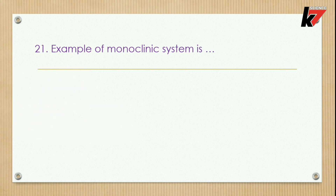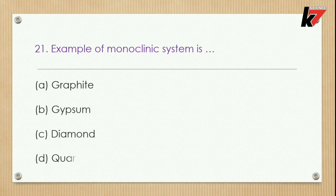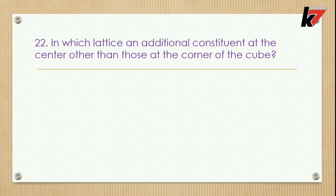Question 21: An example of the monoclinic system — options: graphite, gypsum, diamond, or quartz. Graphite is from hexagonal; gypsum is from monoclinic; diamond is from cubic; quartz is from hexagonal. The correct option is gypsum.